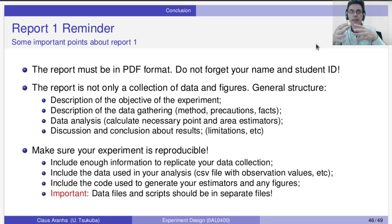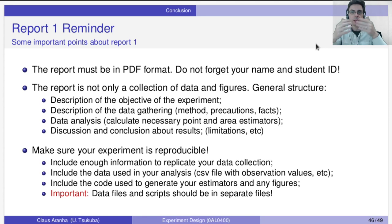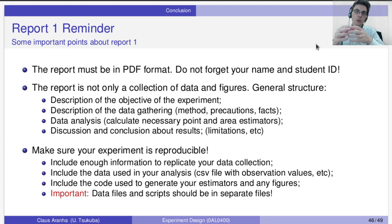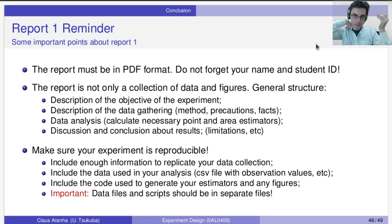Then you do the data analysis. That's where you calculate the estimator for whatever you're trying to measure — the point estimator, the confidence interval. You might draw an image to show the difference in the data, etc. Finally, based on these estimators, you discuss the conclusions and results. Talk about the limitations — for example, we did this experiment but could not collect data about X, so our experiment does not consider X. Discuss whether you found what you expected or something different — we expected A, but we found B.